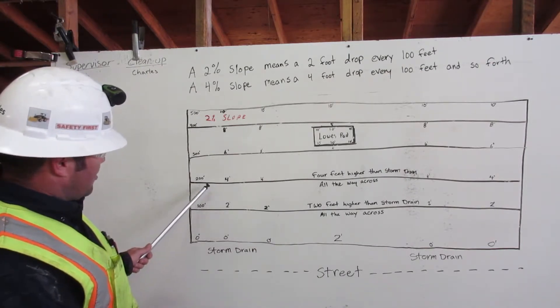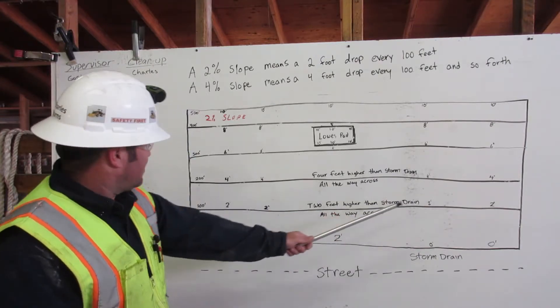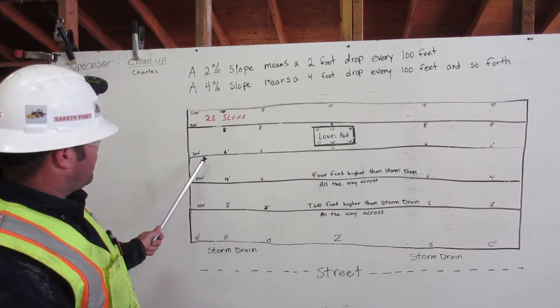At 200 feet, we will be 4 feet higher all the way across from the storm drain. At 300 feet, we will be 6 feet higher.